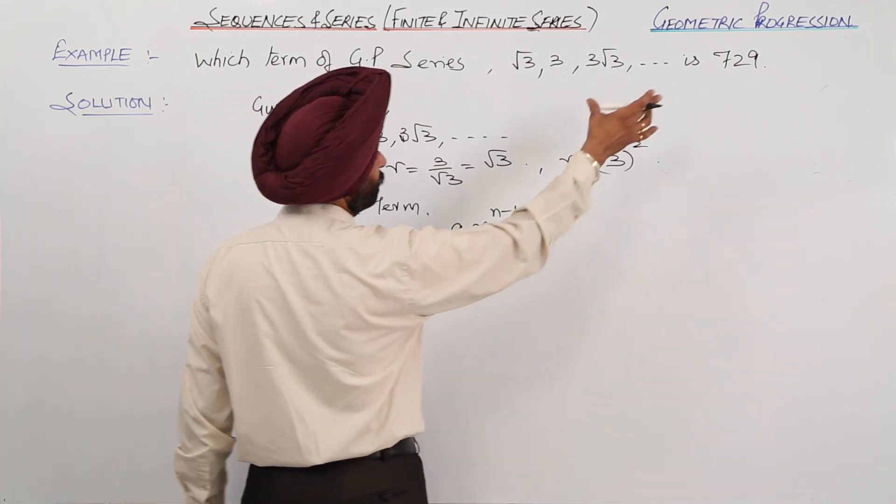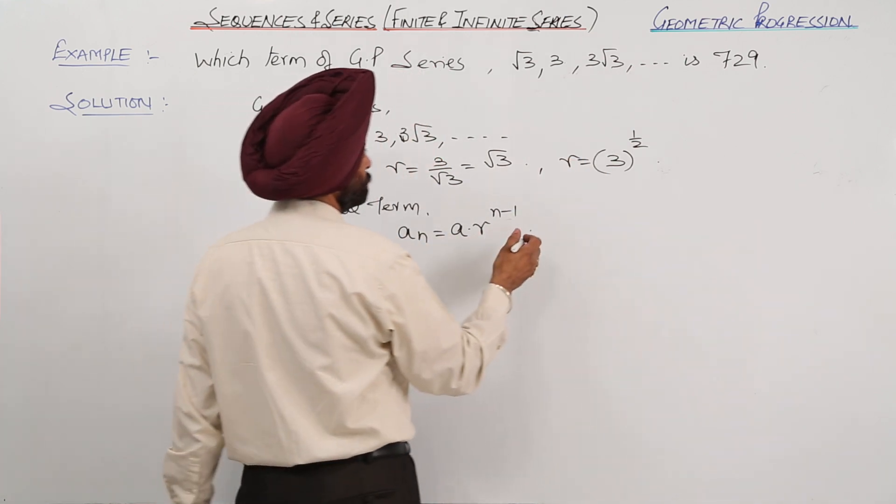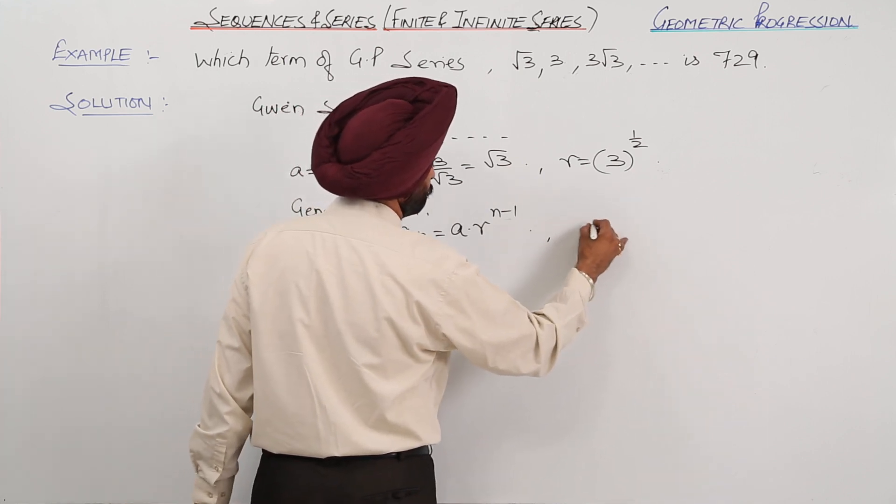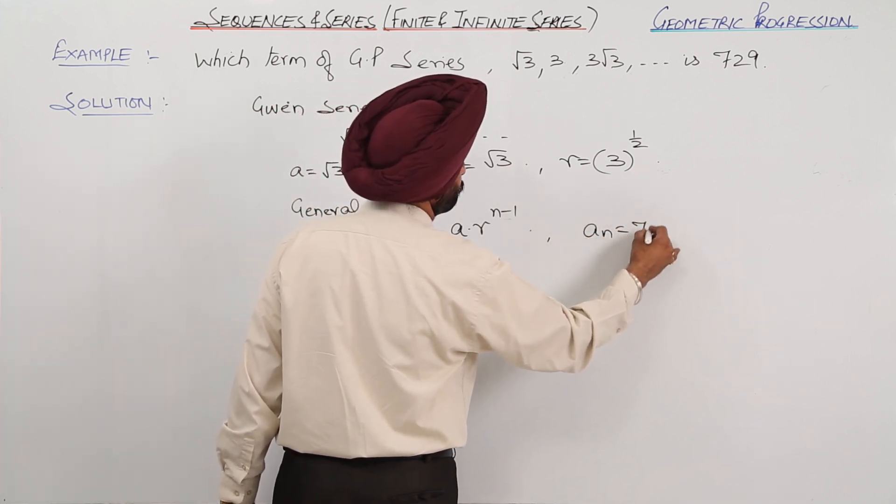We have to find which term is 729, so an = 729.